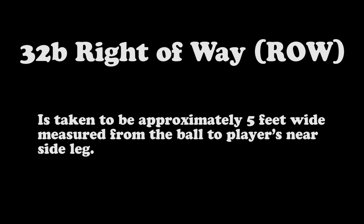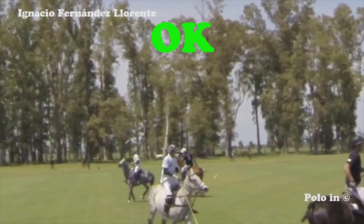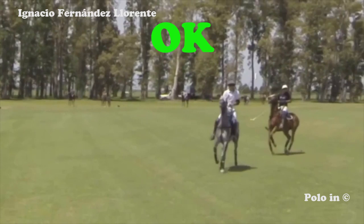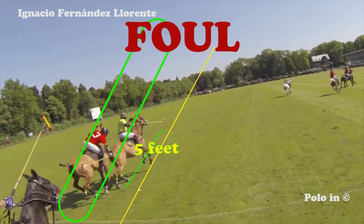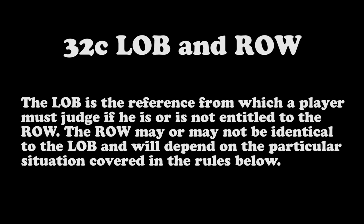The right of way is taken to be approximately 5 feet wide, measured from the ball to the player's nearside leg. Opponents riding in front of the man on the row must vacate a space of 5 feet from the ball to their opponent's rear legs — approximately 2 horses' distance. If the row is a right to play and to move freely, opponents cannot interfere with the player's pace ahead. They can only stand to the side, as in this case. But if they do get in front, they must be at least 2 horses away. If there are not 2 horses' distance, it is a foul.